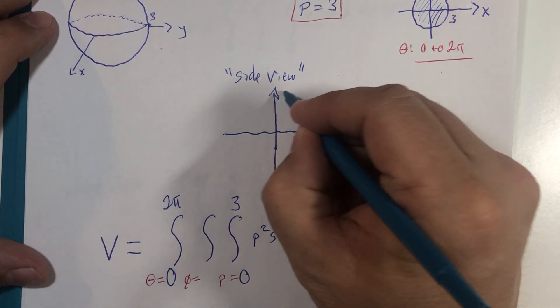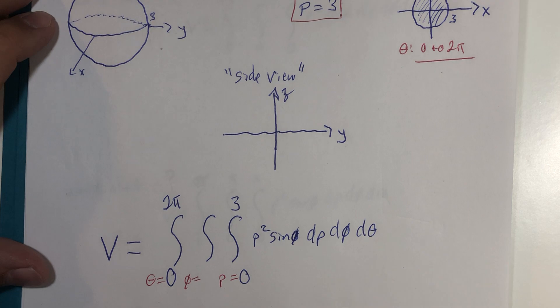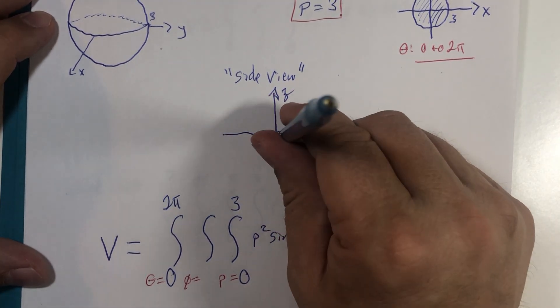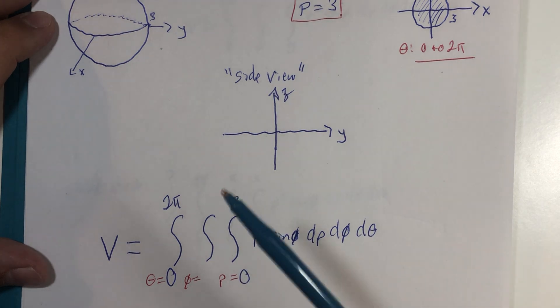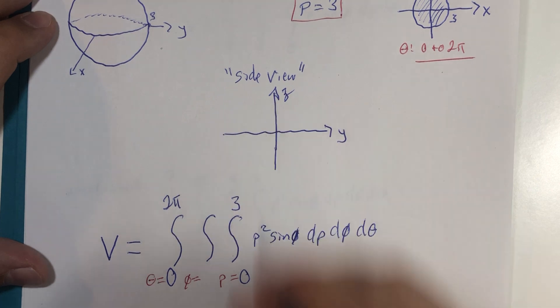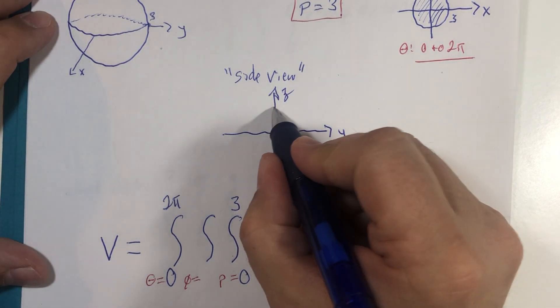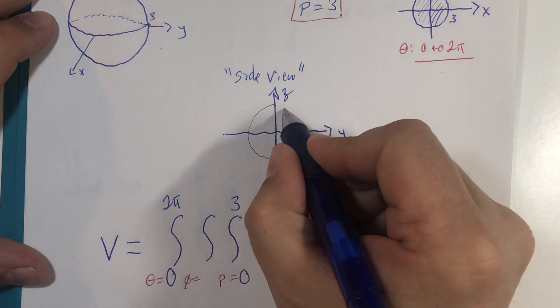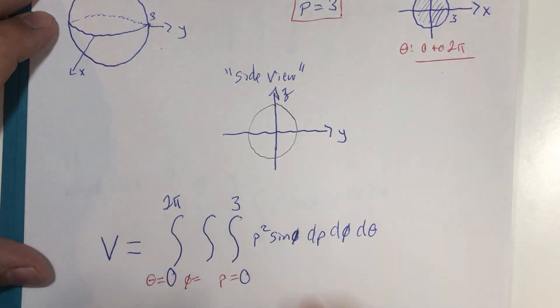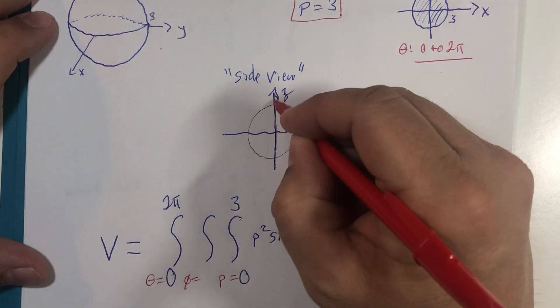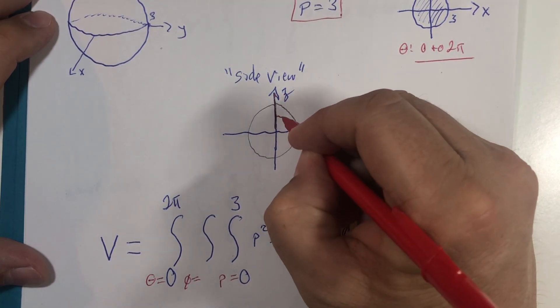There's the y-axis and there's the z-axis. The x-axis would be shooting straight out at us. Okay, so I want you to see this side view. We would see again a circle of radius three here. The angle phi is from the positive z-axis all the way down.